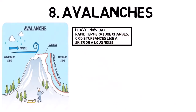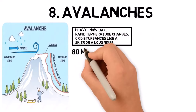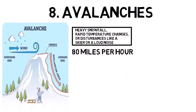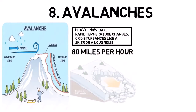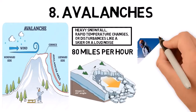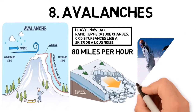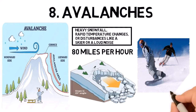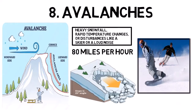Avalanches can travel at speeds of up to 80 miles per hour, burying anything in their path under tons of snow and debris. They pose significant risks to people in mountainous areas, particularly those engaging in winter sports like skiing and snowboarding.